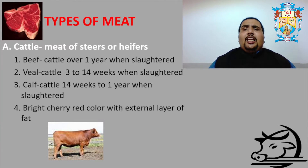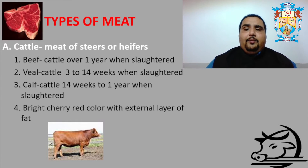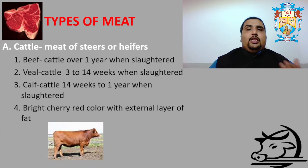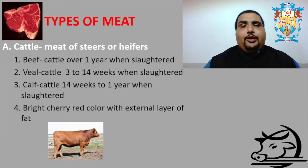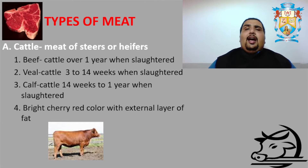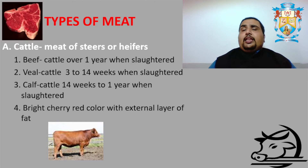The specialty of this meat is it should be a bright red cherry color with an external layer of fat, which shows the good quality of fat. You can see in the picture that the meat has a very bright red cherry color and a small layer of fat covering it, so that the meat won't go rancid.